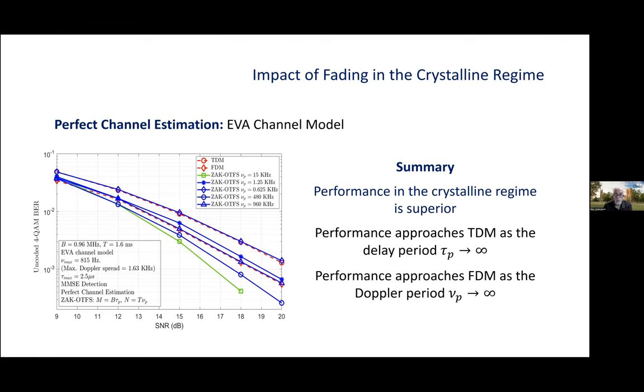So, we pick a particular channel model, the vehicular A model. Doppler spread 1.63 kilohertz, delay spread of 2.5 microseconds. Here we're going to take m equals 64, n equals 16. So, there are m delay bins and n Doppler bins. So, we're focusing on the impact of fading.